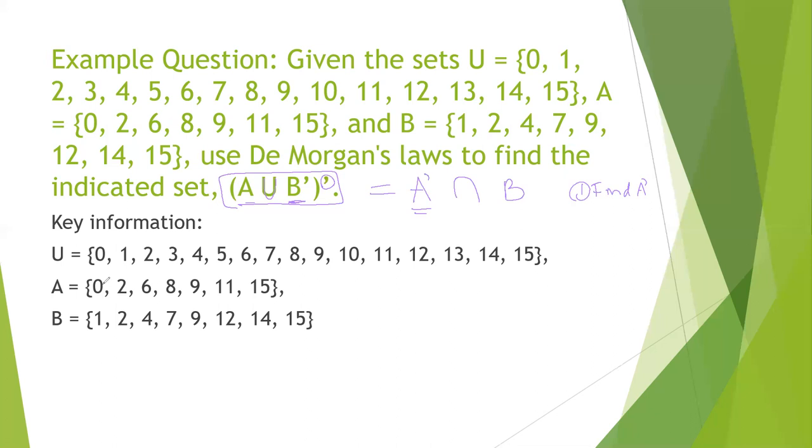So that means we're going to compare A to the universal set. So I'm going to cross out anything that A and the universal set share. So we've got a 9 and a 9, 11s, 15s.